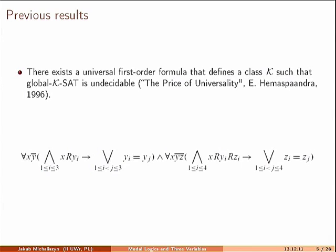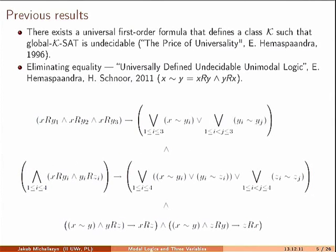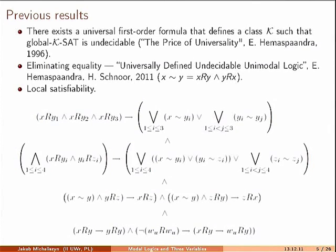In 1996, Edith Hamas Pandra proved that there exists a universal first-order formula defining a class K such that global KSAT is undecidable. That formula contains nine variables and uses equality. This result was improved 15 years later in a paper from MFCS: they removed equality but the formula became more complicated. They also showed undecidability for the local satisfiability problem, with an even more complicated formula.